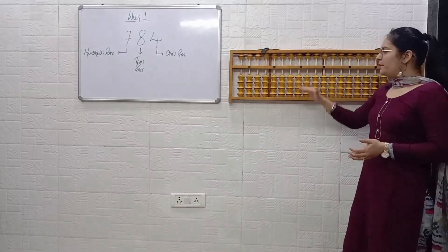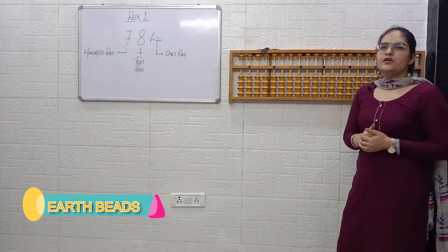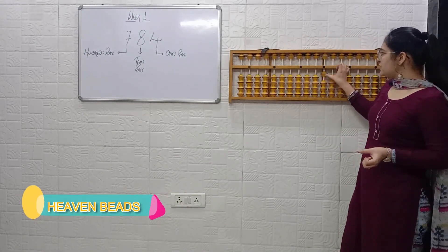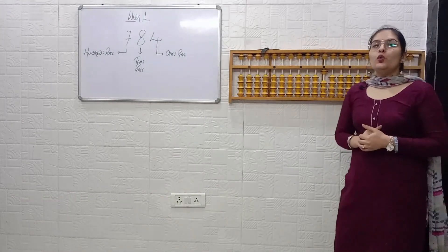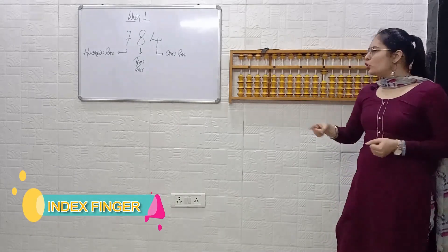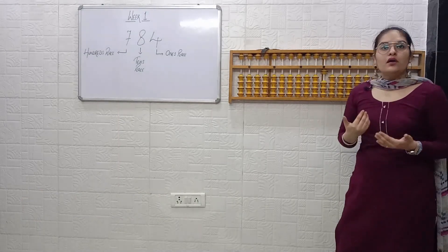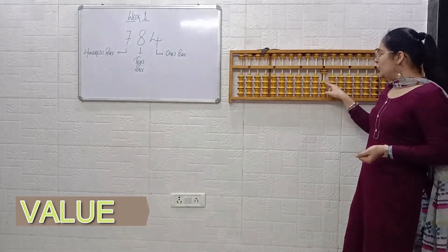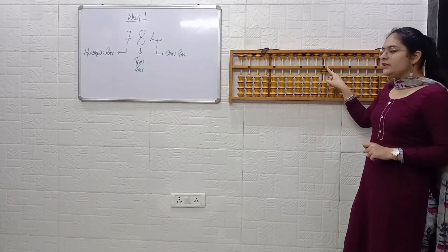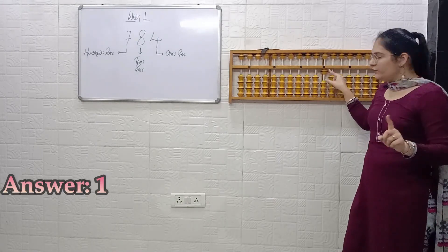We are done with the introduction to the abacus and now we will move further to how to read the beads. The beads which are downwards are Earth beads and the beads which are upwards are Heaven beads. If a bead is touching the value bar, you will read it using your index finger. The value of an Earth bead is 1, so if 1 bead is touching the value bar, the answer is 1.